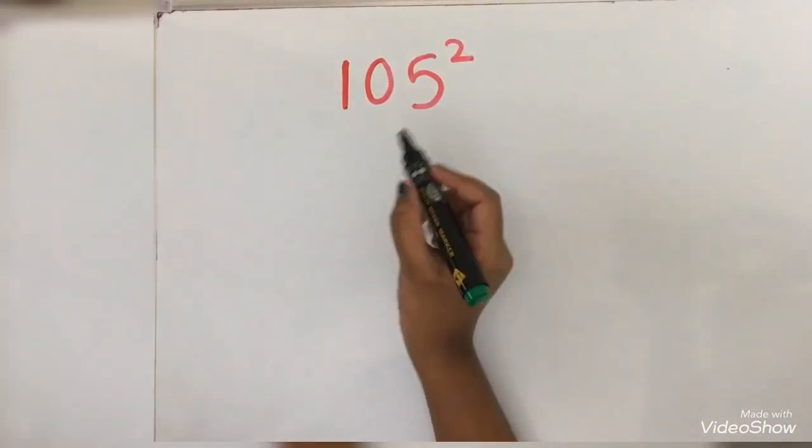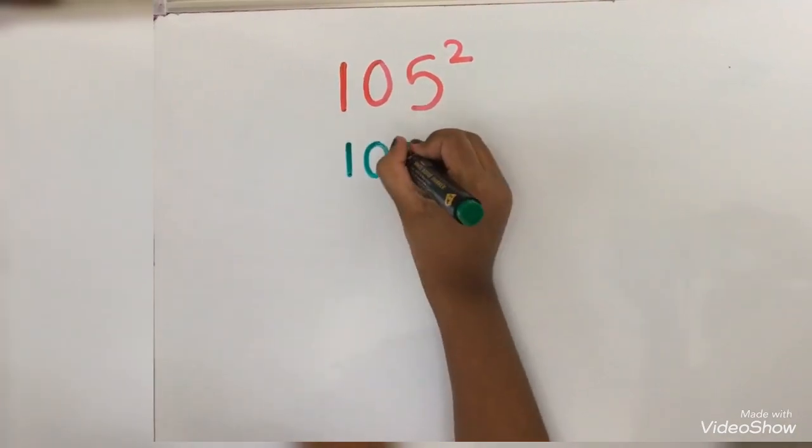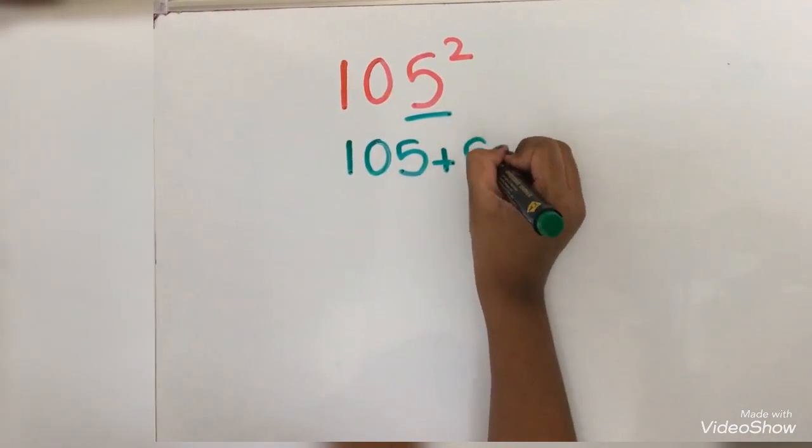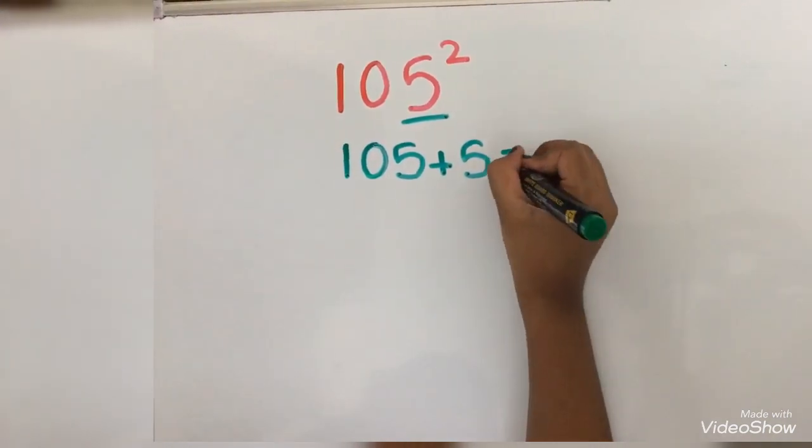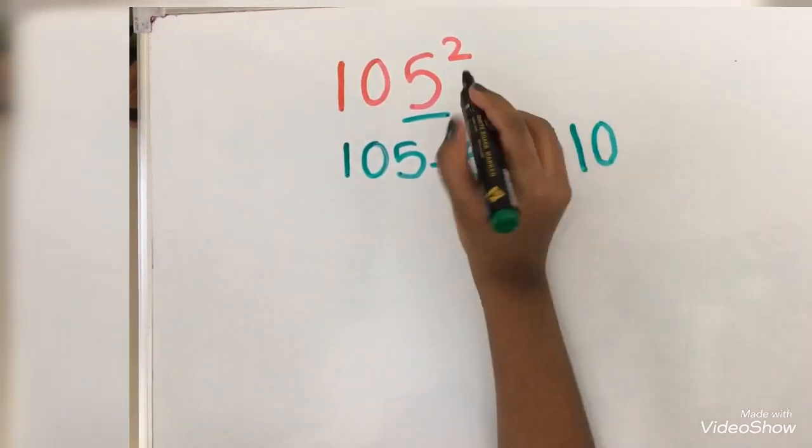Come on, let's write the number here: 105. 105 plus 5 equals 110. Come on, let's write it here.